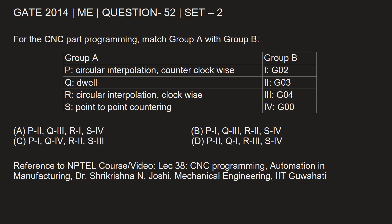This question is from GATE 2014 Mechanical Engineering paper, set 2, question number 52. For the CNC part programming, match Group A with Group B. In Group A we have P: circular interpolation counterclockwise, Q: dwell, R: circular interpolation clockwise, and S: point to point counting.